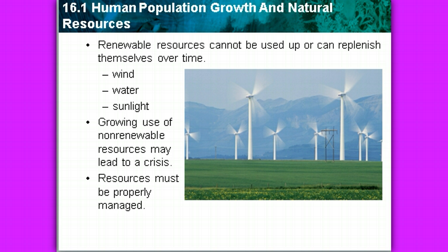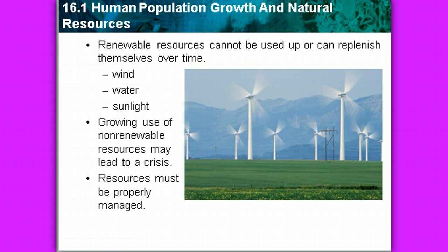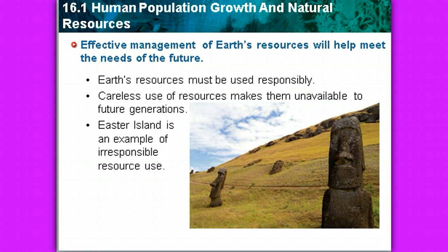Renewable sources cannot be used up or can replenish themselves over time — things like wind, water, and sunlight; things that will cycle or have a never-ending supply. There's been a growing use of non-renewable resources, and that may lead to a crisis. Resources must be properly managed. The image here is of a wind farm, and wind is the primary source of most of the energy used in the state of Wisconsin.